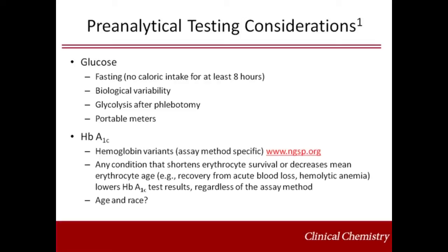Hemoglobin A1C results can be either falsely increased or falsely decreased depending on the particular hemoglobinopathy and hemoglobin A1C assay method used. However, if an appropriate method is used, hemoglobin A1C can be measured accurately in the vast majority of individuals heterozygous for hemoglobin variants. If altered erythrocyte turnover interferes with the relationship between mean blood glucose and hemoglobin A1C values, or if a suitable assay method is not available for interfering hemoglobin variants, alternative non-hemoglobin-based methods for assessing long-term average glycemia, such as the fructosamine assay, may be useful.